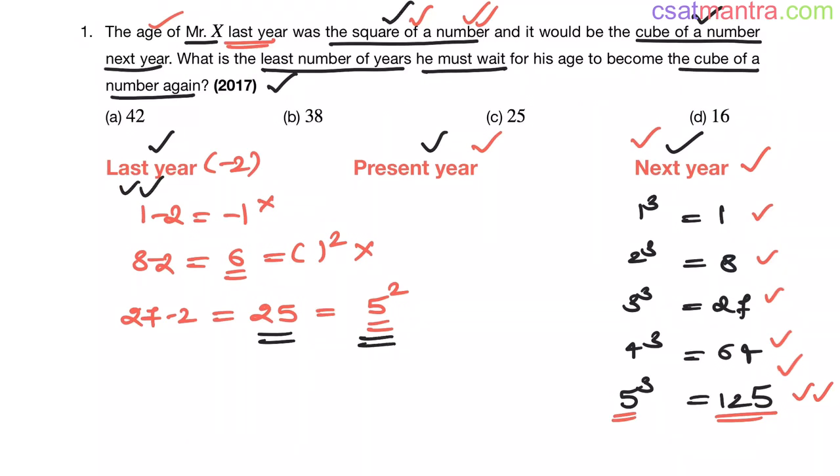So it satisfies condition 1 and 27, the next year's age, is a cube of a number - 3 cube - so it satisfies condition 2 also. So the present age would be 26. 25 is the last year's age, 26 is the present year's age, and 27 is the next year's age.